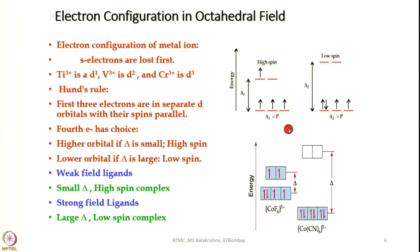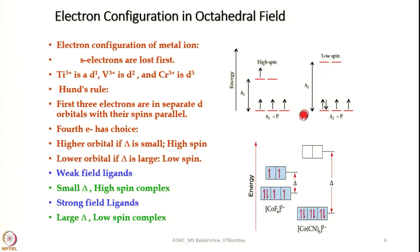While filling electrons, Hund's rule is followed. The fourth electron has a choice: it can go to a fourth separate orbital or it can pair with an existing electron. This requires us to introduce the term pairing energy. If Δ (delta) is small, high-spin complexes result; if Δ is larger, low-spin complexes form. In weak field ligands, the CFSE is smaller than the pairing energy, so electrons are promoted to the higher e_g level rather than pairing — resulting in high-spin complexes. In strong field ligands, the pairing energy is smaller than the promotion energy, so electrons pair in t_2g — resulting in low-spin complexes.